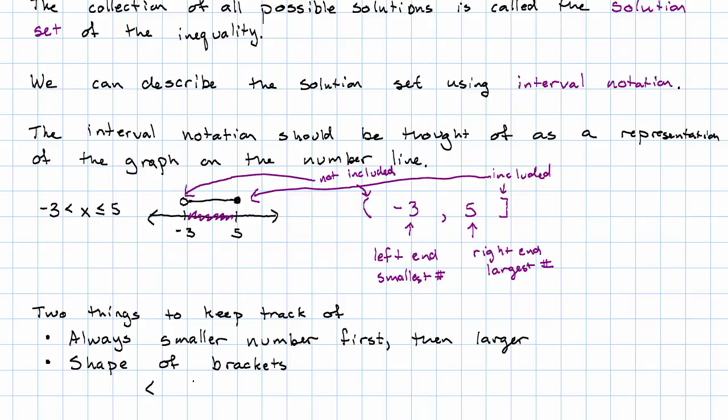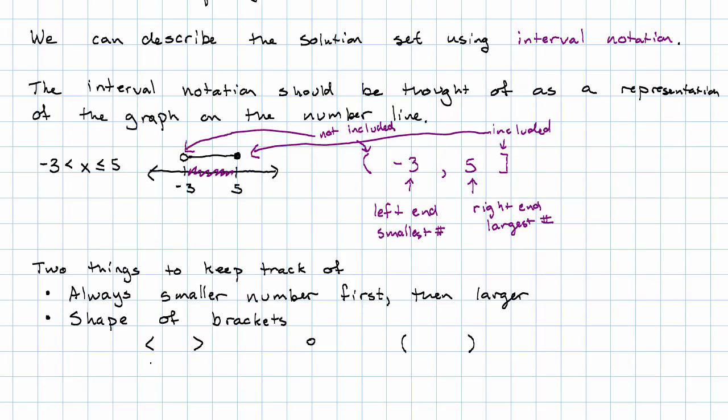And then the other thing to keep track of is the shape of the brackets. If the inequality symbol is strictly less than or strictly greater than, then we have an open dot and we'll use the round bracket, the parentheses. If the inequality symbol is less than or equal to or greater than or equal to, then we have a filled in dot and we use the square bracket.